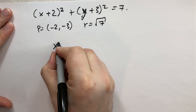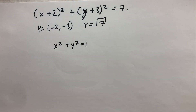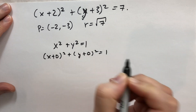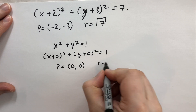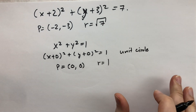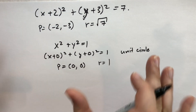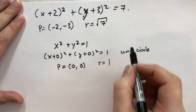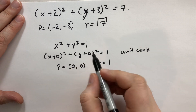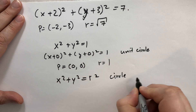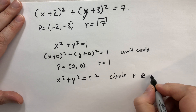Another example: x squared plus y squared equals 1. This is the same as (x plus 0) squared plus (y plus 0) squared equals 1, so the center is (0, 0) and the radius is the square root of 1, which is just 1. This is what we call the unit circle. It has an area of pi and a circumference of 2 pi. Indeed, any time we have x squared plus y squared equals r squared, we know the center is (0, 0) and the radius is r.